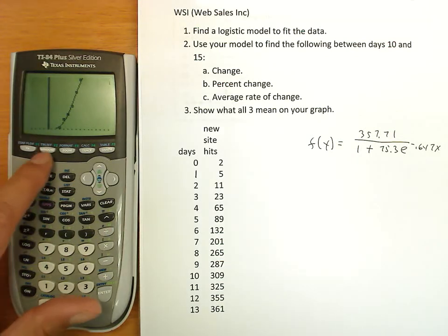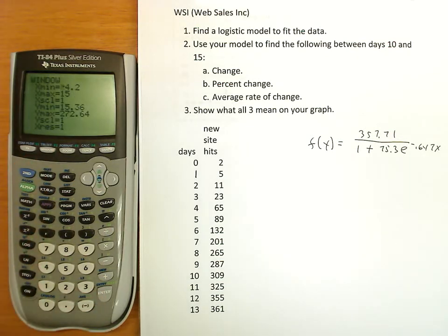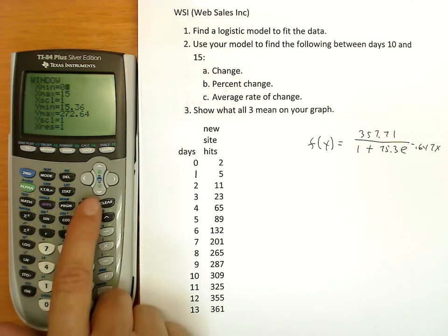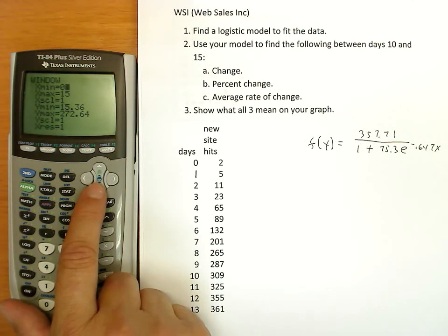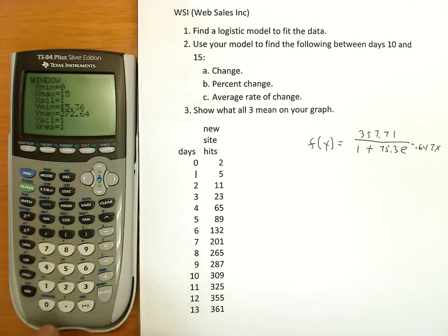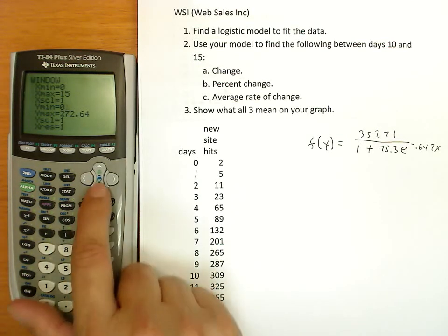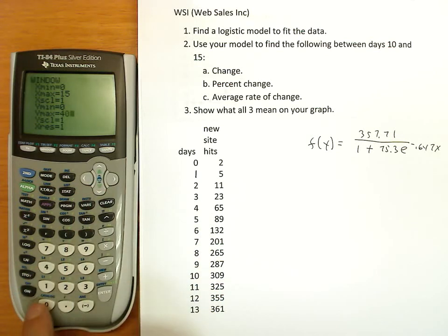And we'll redo our graph so we can see the data and our actual model fitting to the data. Let's take a look at what window the calculator has chosen here. I'm not liking that window at all. I want to go from 0 through 15. And y min 0, it looks like I have a maximum of at least 361, so I'm going to go to 400. The graph in this window will be much better.